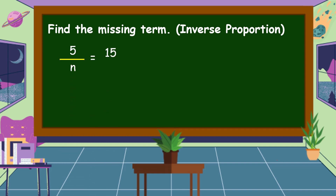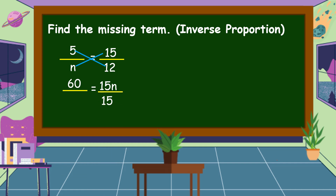Example 3: 5 over n is equal to 15 over 12. This is in fraction form, so we use cross multiplication. 5 times 12 is equal to 60, and n times 15 is equal to 15n. We divide both sides of the equation by 15: 15n divided by 15 is equal to n, and 60 divided by 15 is equal to 4. Therefore, the value of our missing term is 4.